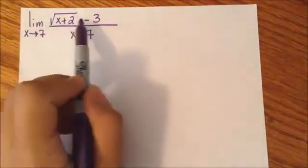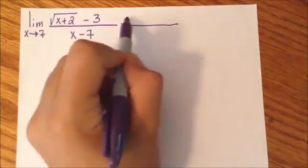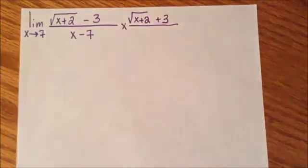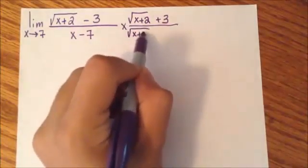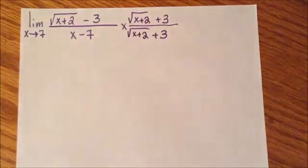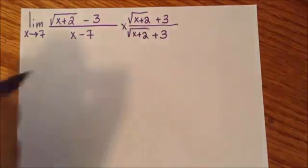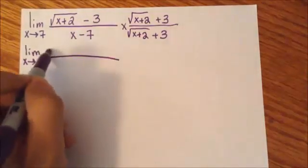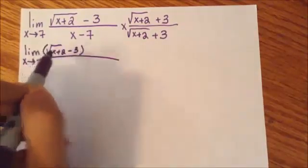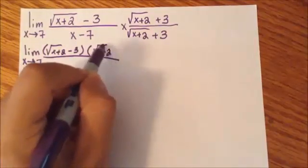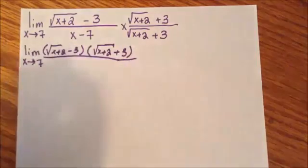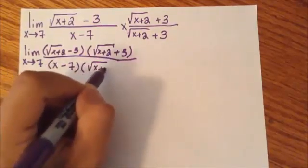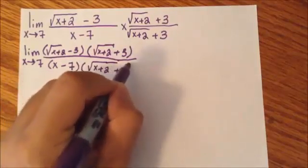A conjugate means take whatever you have in your numerator and multiply it by its opposite. Here we have square root of (x plus 2) minus 3, so the conjugate is square root of (x plus 2) plus 3 — we simply change the minus sign to plus. We multiply both the numerator and denominator by this conjugate: square root of (x plus 2) plus 3.